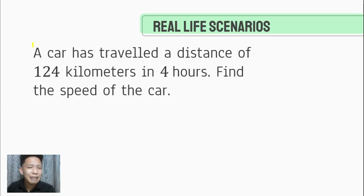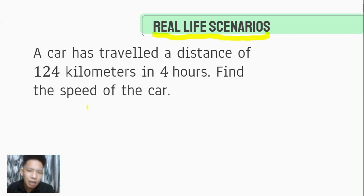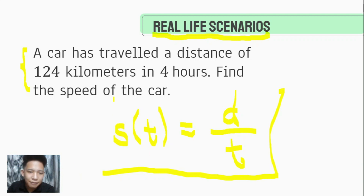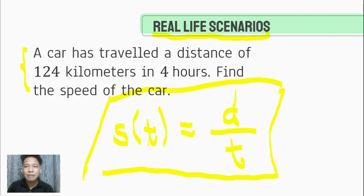Now let's have this problem, which represents a function. A car has traveled a distance of 124 kilometers in 4 hours — find the speed of the car. The speed of the car is determined by the time, so we have the function S of T, which equals the distance traveled divided by the time it took: S(T) = D/T. This problem is modeled by that formula, and that's how functions can serve as models in real-life situations.